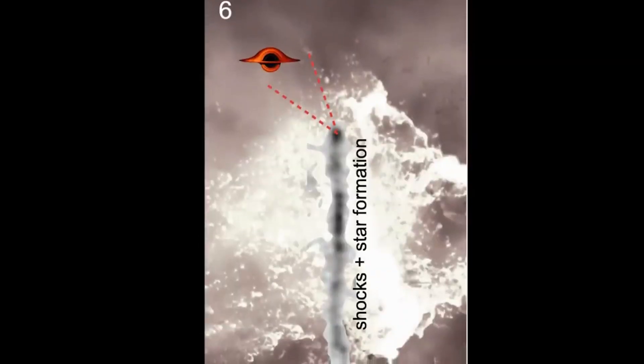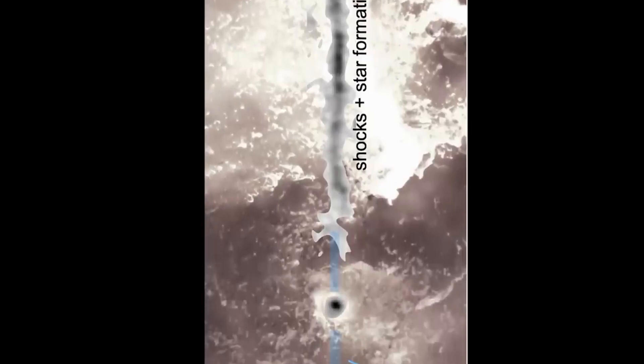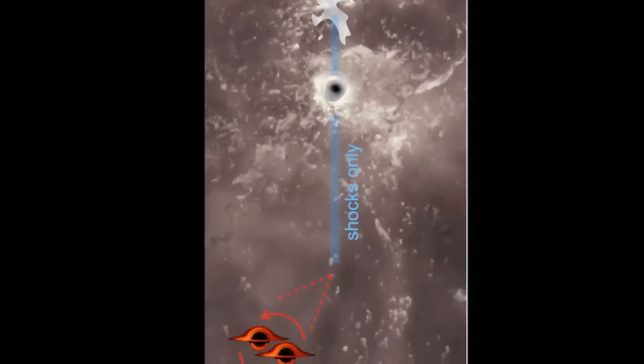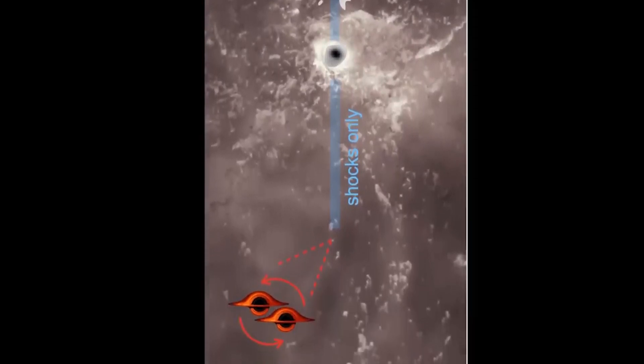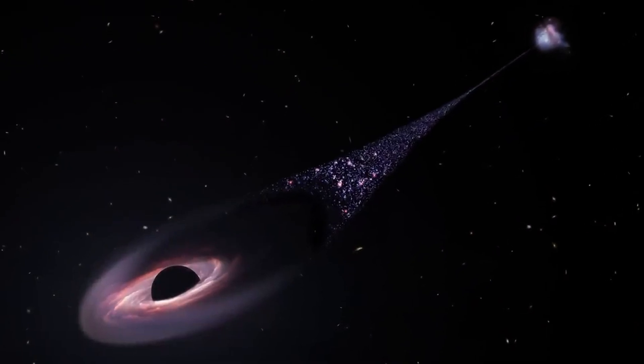At the same time, the authors note that the fate of the binary system that pushed out the third black hole may also be similar. They could have flown out in the opposite direction, but at a slower speed. As a result, the merged galaxy was left without a black hole at all, and one of the outcasts made its way through the intergalactic gas to create a bridge of young bright stars.